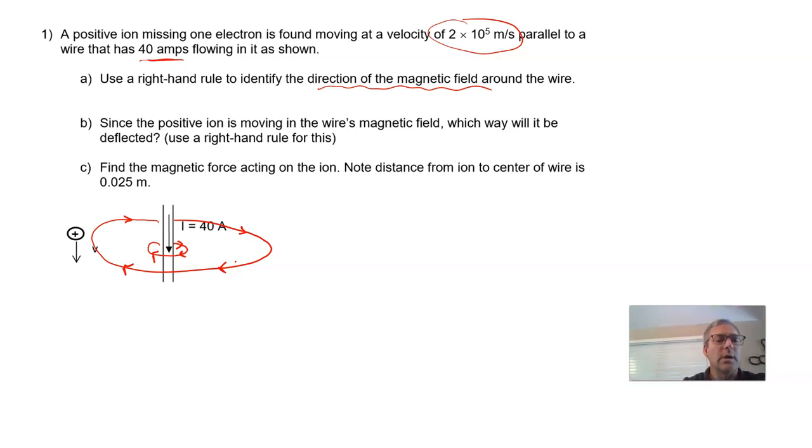That's the second right hand rule. On your equation sheet, you'll find a relationship between magnetic field strength and current and distance from the wire. B equals mu not i over 2 pi r.